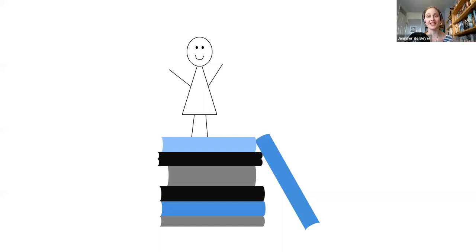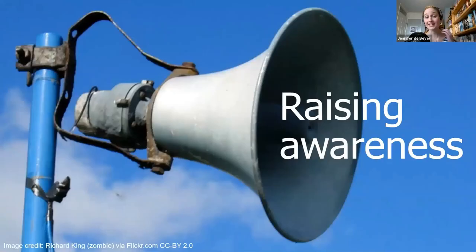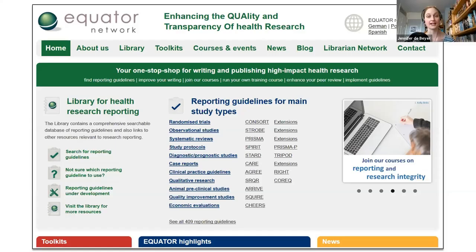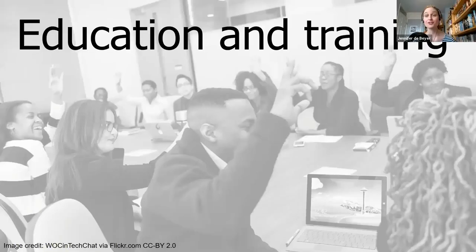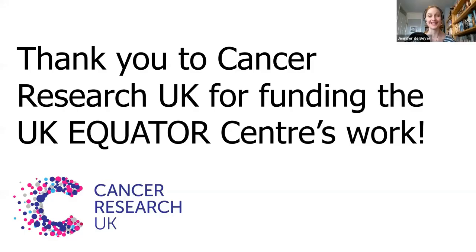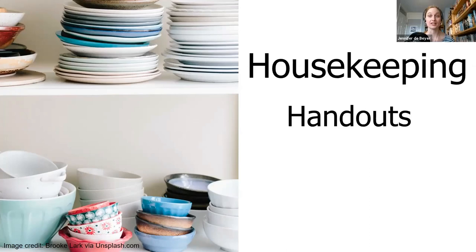The UK EQUATOR Centre is part of the EQUATOR Network, an international organization aiming to enhance the quality and transparency of health research by improving the quality of health research writing. We do this in three ways: we raise awareness of reporting guidelines, we provide resources on academic writing, and we offer education and training — which is why I'm here today. A huge thank you to Cancer Research UK whose funding supports the UK EQUATOR Centre's program.